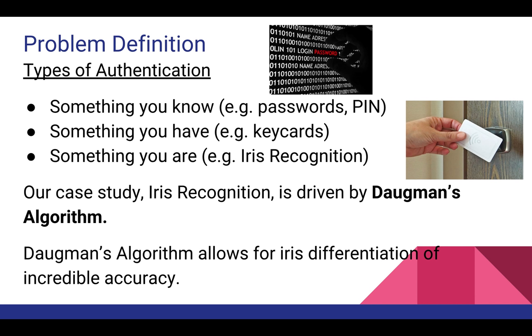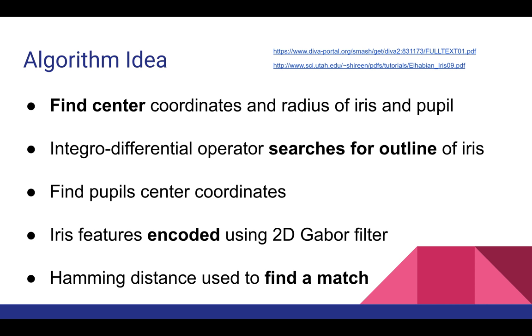Using Iris Recognition and biometrics in general as a form of authentication solves these issues. You can't lose your iris, nor can it be hacked or replicated, because Daugman's Algorithm is incredibly accurate at differentiating irises.